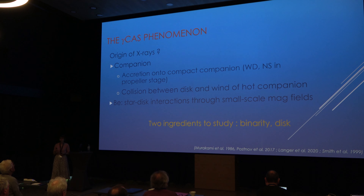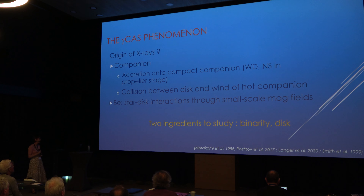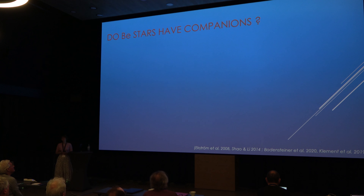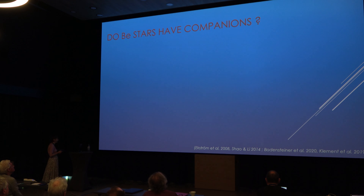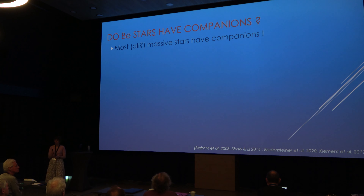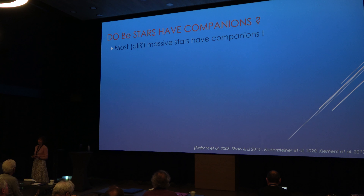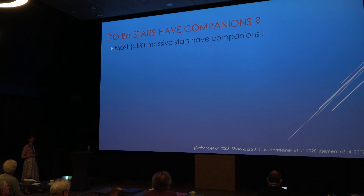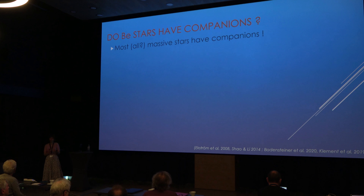So the two main ingredients to test are binarity — the presence and nature of companions — and the link with the disk. Do those stars have companions? The overall context is that massive stars are essentially all in binaries, at least. If you take the fraction of binaries it's more than 100% because in fact there are triples and quadruples. For BE stars in particular, it is very difficult to study because of the emission lines, the varying disk, and the fact that as fast rotators all the photospheric lines are broad, making it difficult to pinpoint velocities.